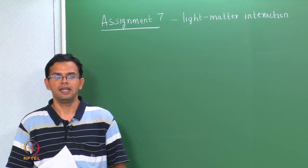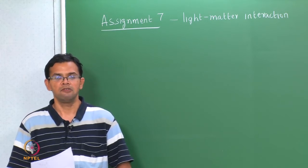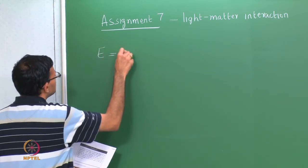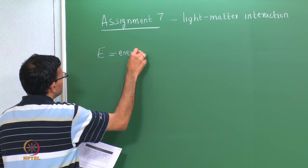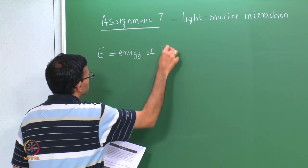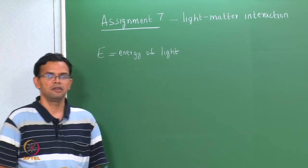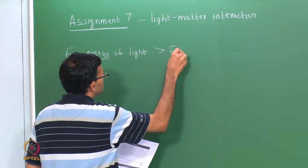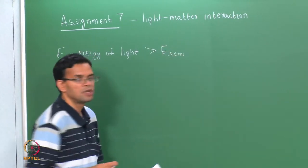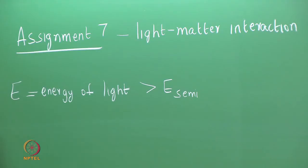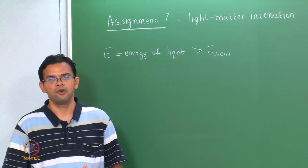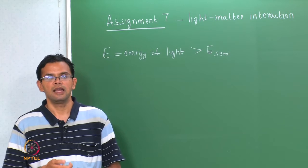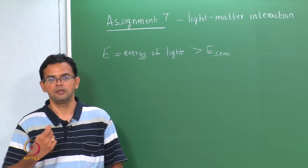When we talked about light interacting with matter, the basic thing we said was that the energy of the light E must be greater than some interaction energy within the semiconductor. In most cases this interaction is essentially the band gap of the material, so that when the energy of the light is greater than the band gap, electrons are excited from the valence to the conduction band.